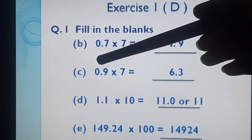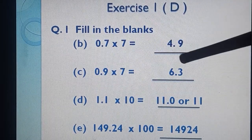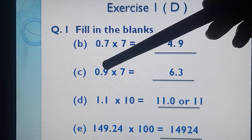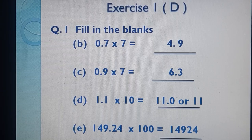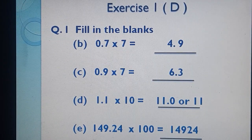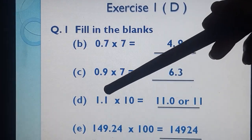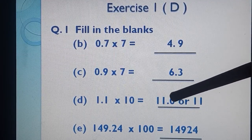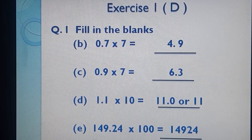Next part: 0.9 × 7. Nine sevens are 63. After decimal there is 1 digit, so our product will be 6.3. Next part: 1.1 × 10. 11 × 10 = 110. After decimal there is 1 digit, so in the product after decimal we want 1 digit — it becomes 11.0, or simply 11. Next part: 149.24 × 100. We write down 14924 and then two zeros — 1492400 — then after decimal we want 1 and 2, two digits. So the answer is 14924.00, which is simply 14924.